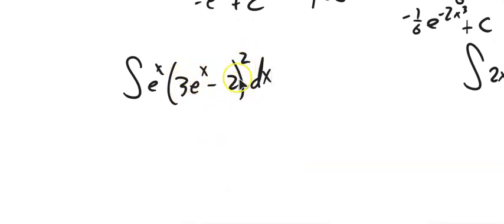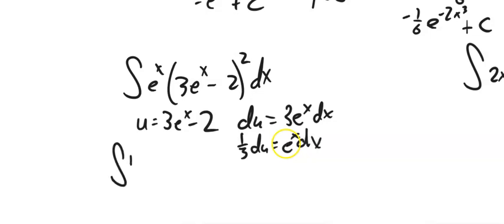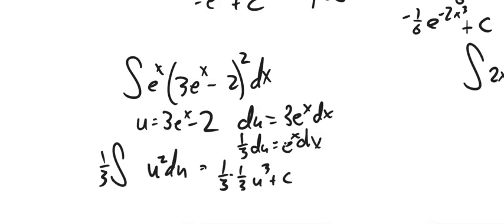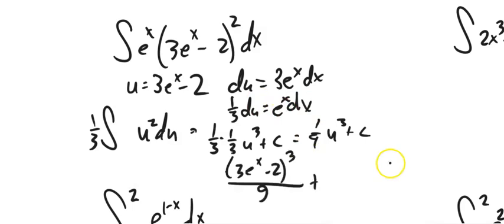I've got something squared here, so for my u substitution I'm going to go with that something — just thinking about what's inside what. The derivative of that: e to the x is its own derivative, the derivative of a constant is 0. I've got the e to the x and the dx, but I've got this extra 3, so I'm going to take a third of it. I've got 1/3 u squared, so that third can come out. I have 1/3 times the integral of u squared, which is 1/3 u cubed — so that would be 1/9. Substitute u back in: 1/9 times that thing cubed, or that thing cubed over 9. Plus some constant.